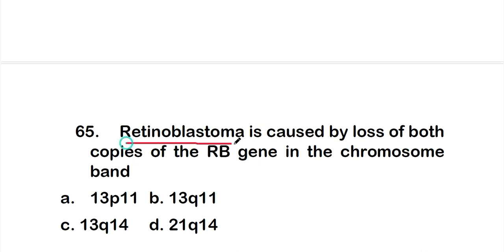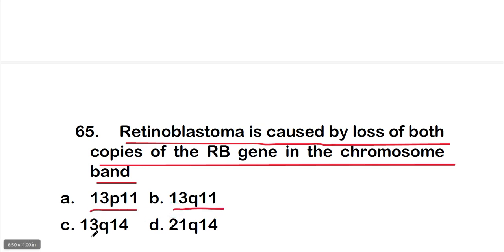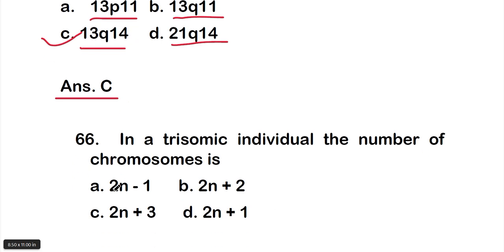Question 65: retinoblastoma is caused by loss of both copies of the RB gene in the chromosome band — Option A: 13p11, Option B: 13q11, Option C: 13q14, Option D: 21q14. The right answer is Option C — 13q14. Retinoblastoma is caused by loss of both copies of the RB gene in chromosome band 13q14.